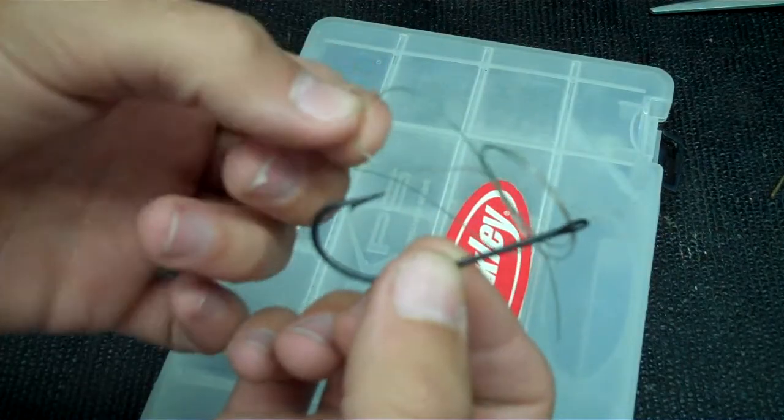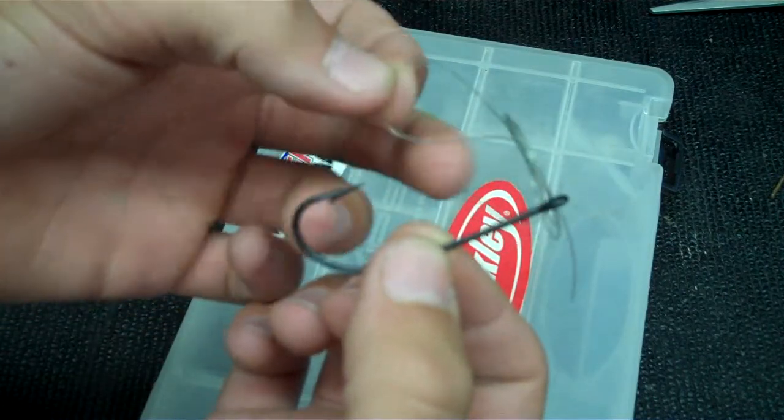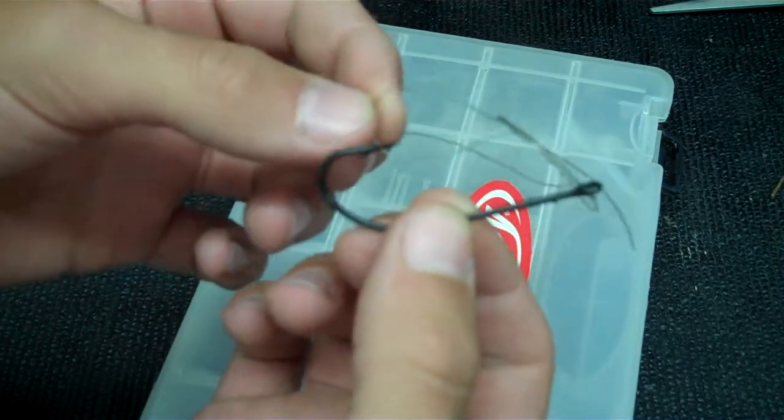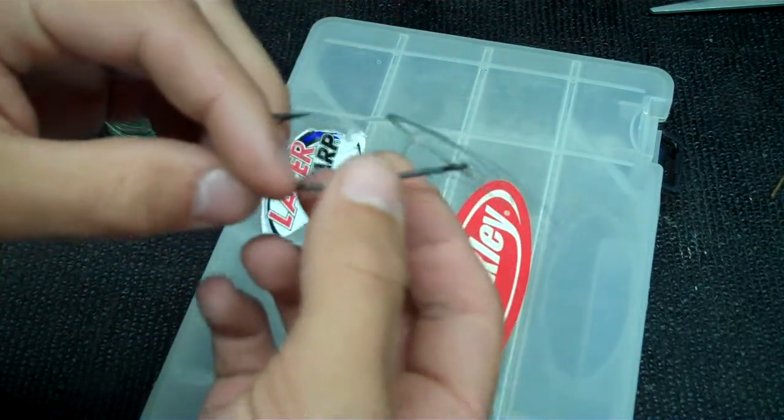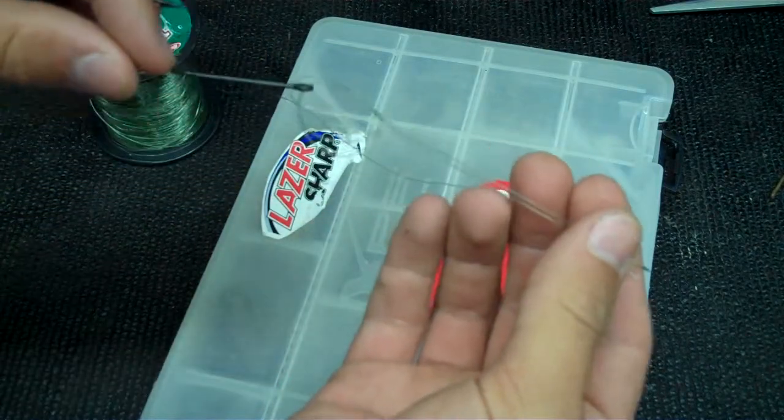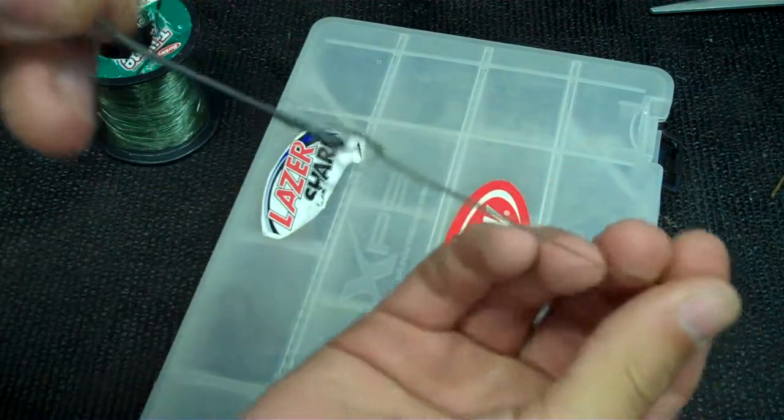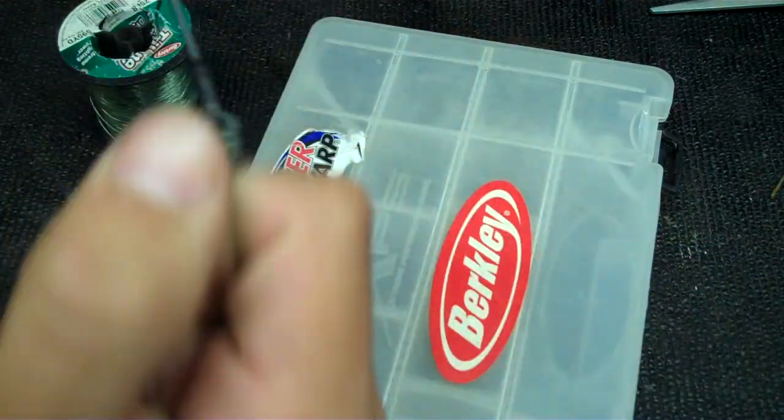Here you have the knot and you have another loop right here. You take that loop and put it through the hook, grab the remaining two lines and pull tight. That should cinch up to a real tight,